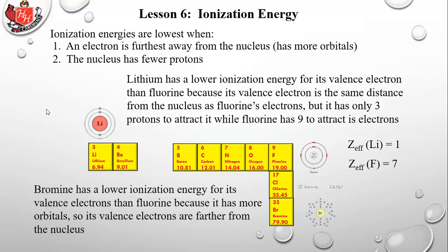Bromine has a lower ionization energy than fluorine because it has more orbitals — its valence electrons are farther from the nucleus and shielded by many more core electrons. Even though bromine has more protons, the outer electrons are screened so heavily that fluorine, with far fewer core electrons and a much smaller atom, holds its electrons more tightly.